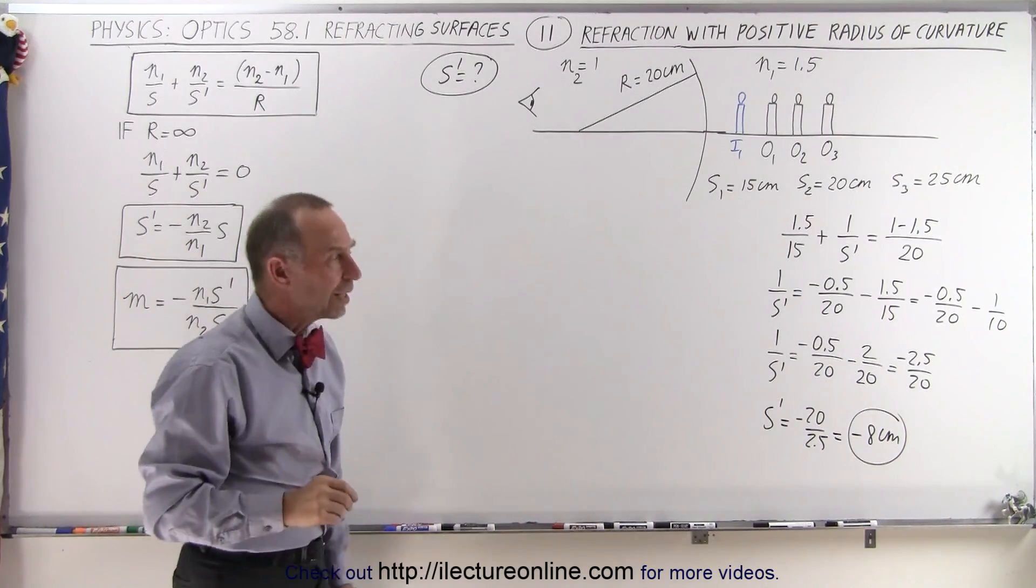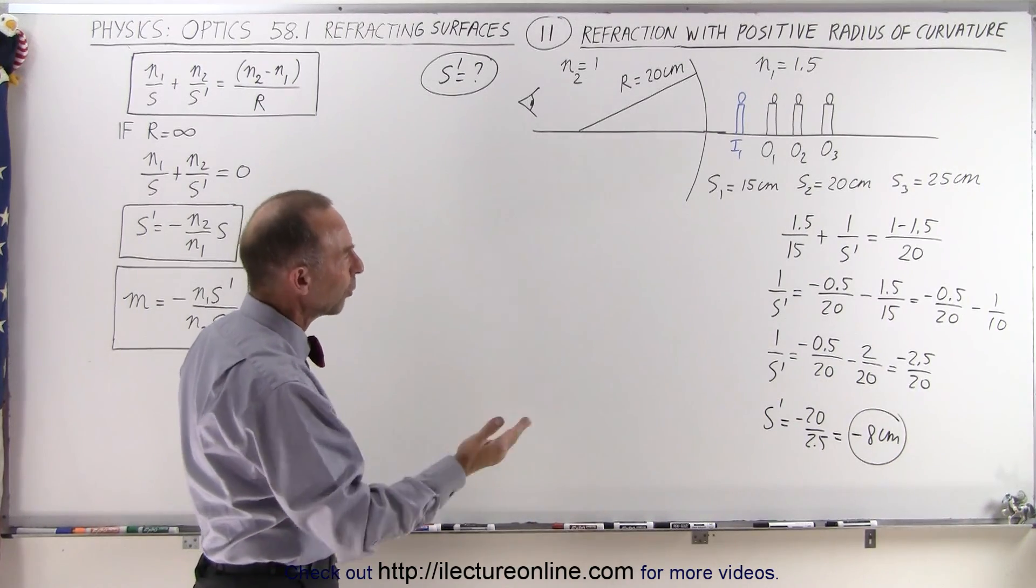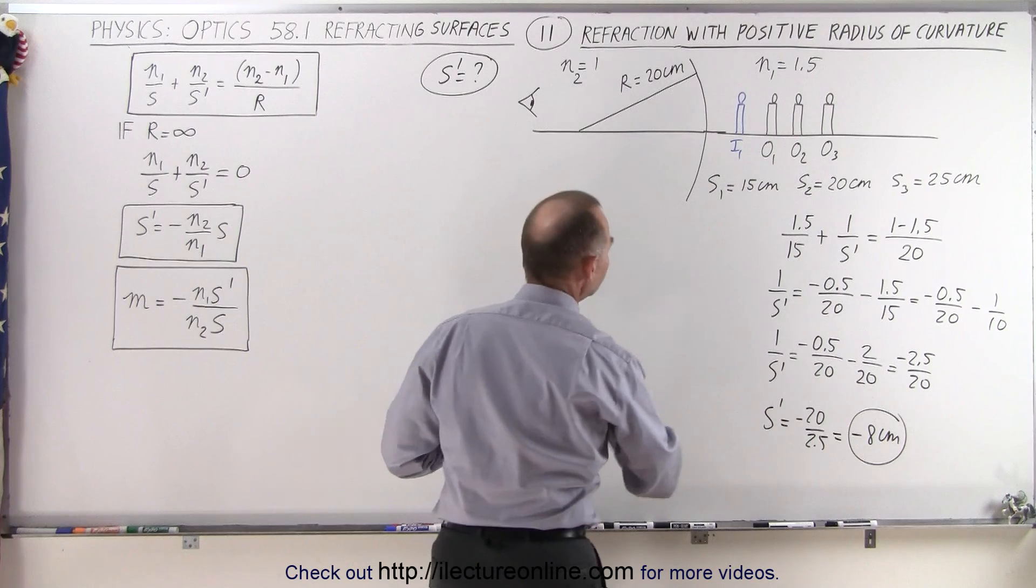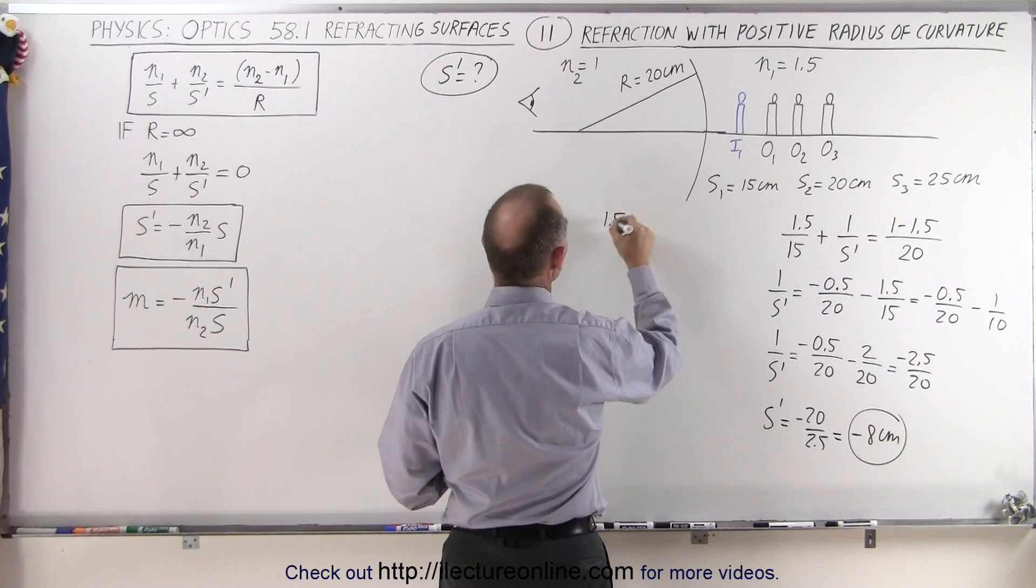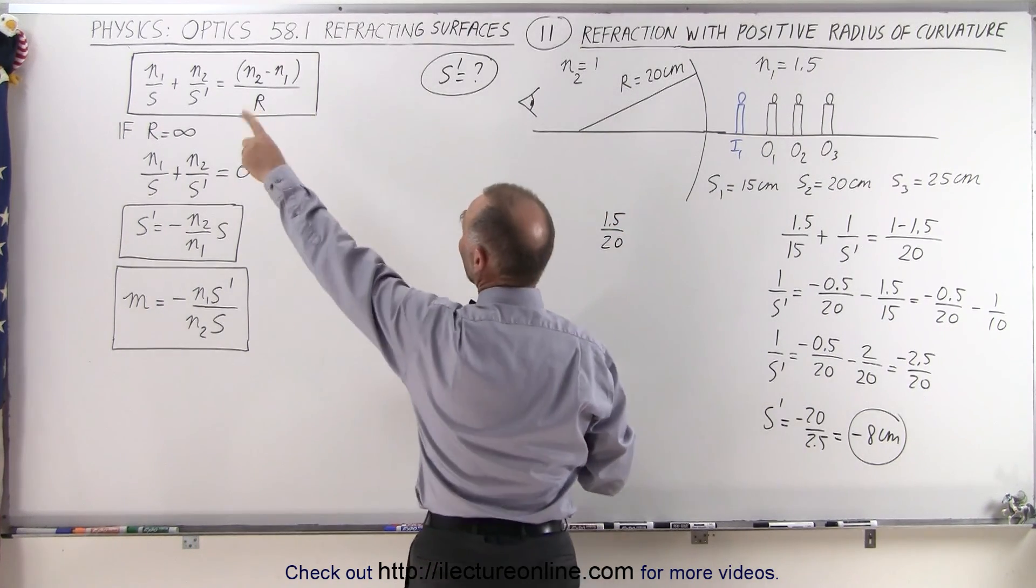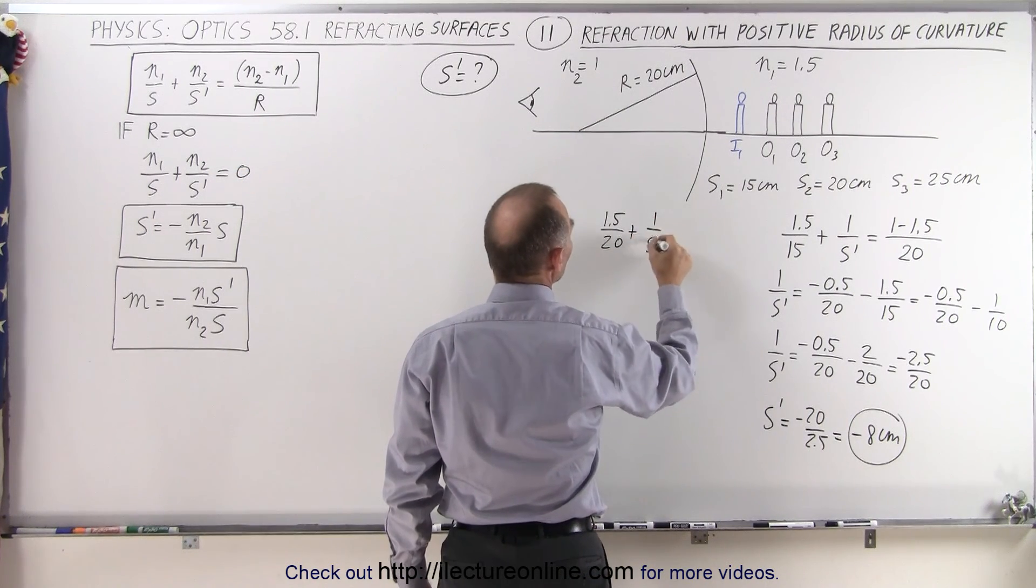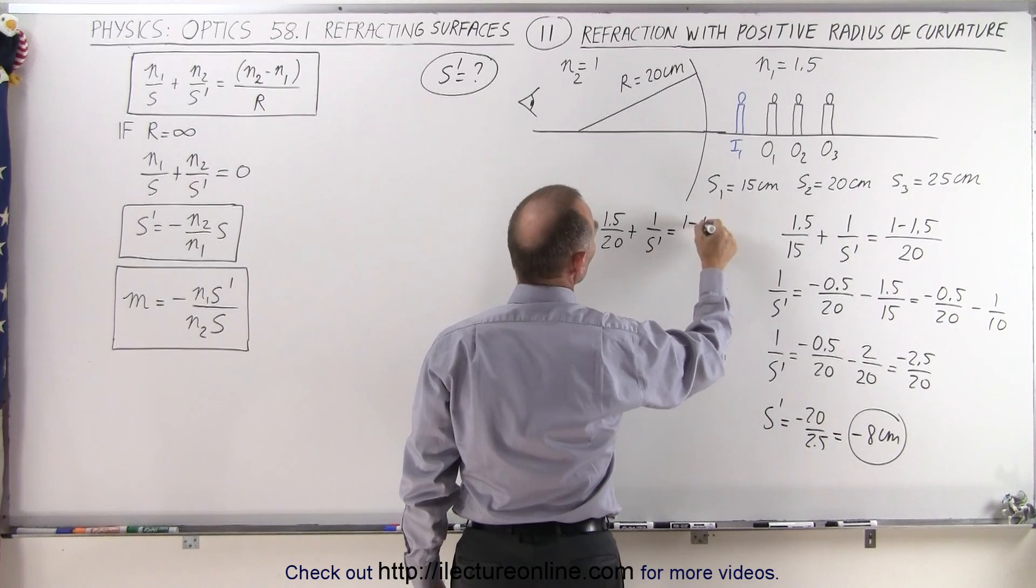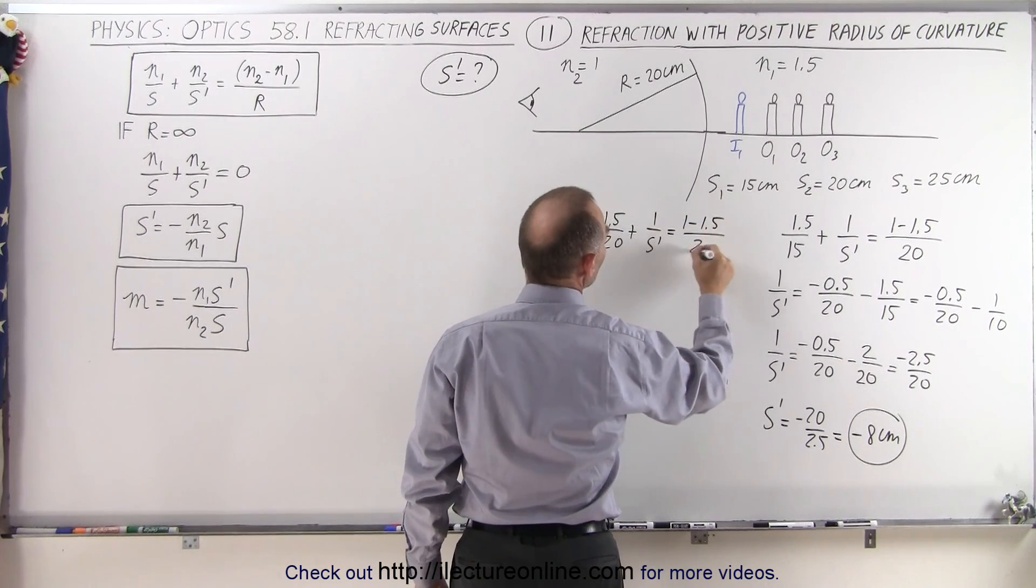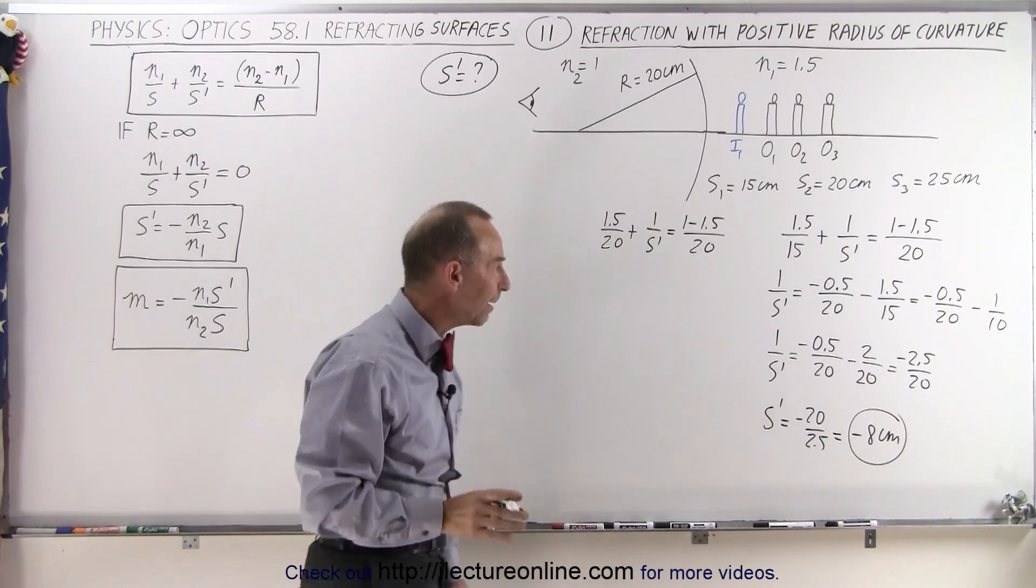So what happens to that image if we move the object to the right? So let's try that. So now we end up with 1.5 divided by 20, which is N1 over S, plus 1 over S' is equal to 1 minus 1.5 over 20. The right side will always remain the same.